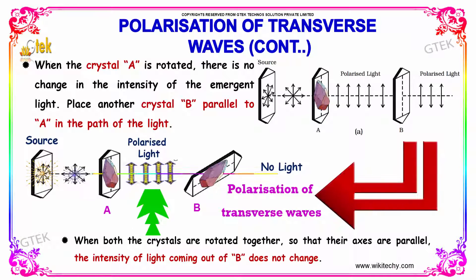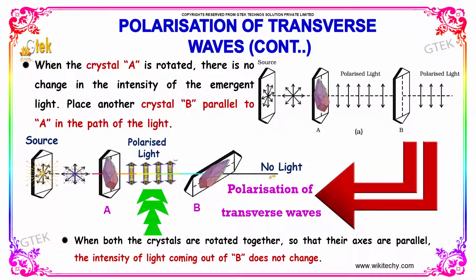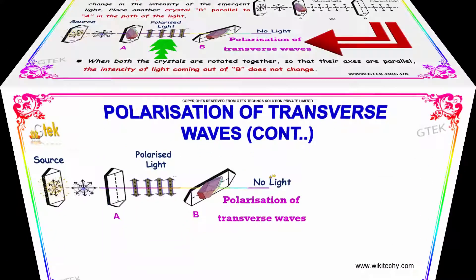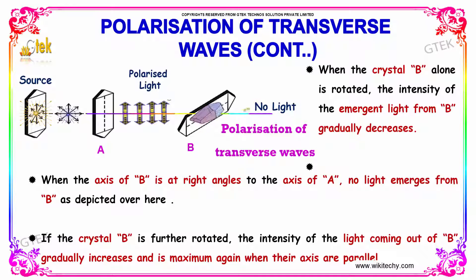When both crystals are rotated together so that their axes are parallel, the intensity of the light coming out of B does not change. When crystal B alone is rotated, the intensity of the emergent light from B gradually decreases. When the axis of B is at right angles to the axis of A, no light emerges. If crystal B is further rotated, the intensity of the light coming out of B gradually increases and is maximum when their axes are parallel.